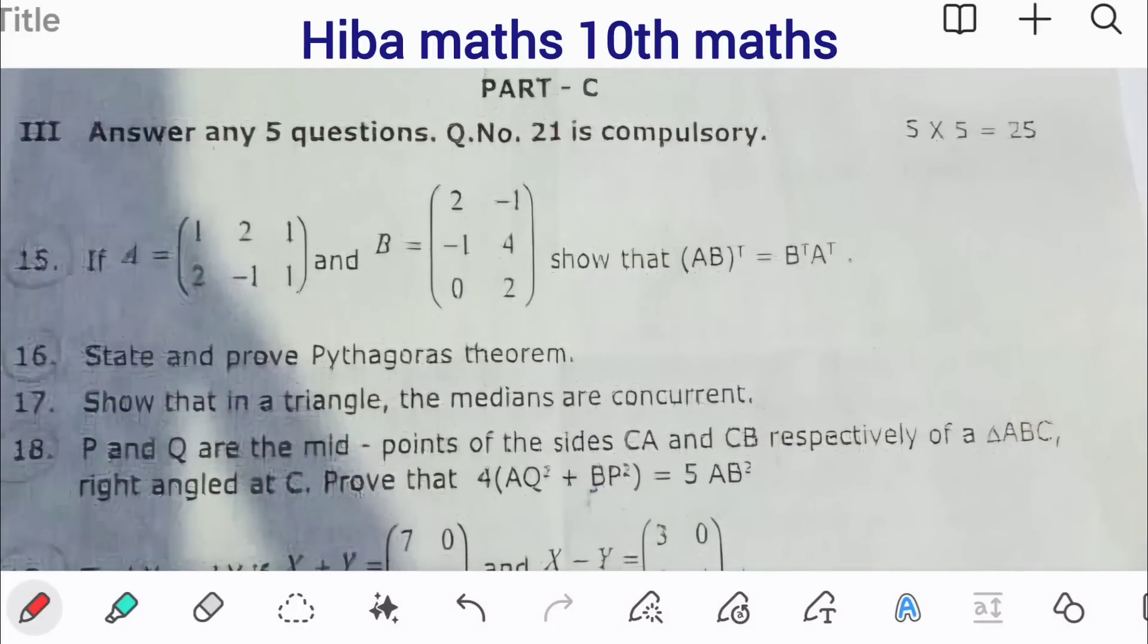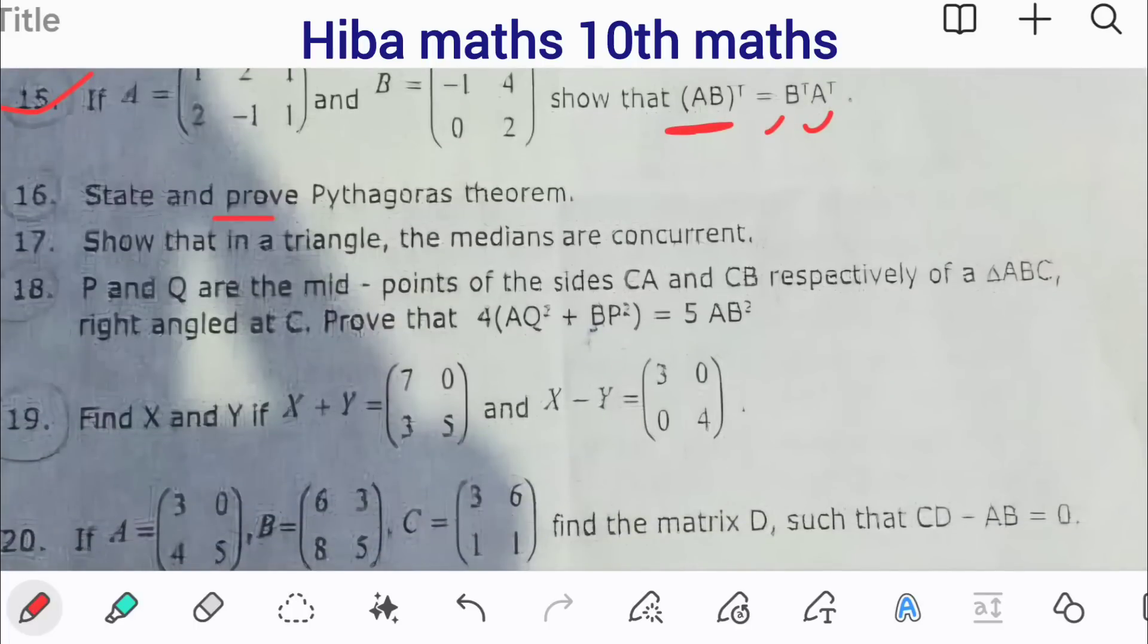Part C: 5 mark questions. Show that (AB) whole transpose equals B transpose into A transpose. First find AB, then transpose it. Or first find B transpose, then A transpose, then multiply. That's what we want to attend. State and prove Pythagoras theorem. Show that in a triangle, the medians are concurrent. Prove that 4(AQ² + BQ²) = 5AB. These are the important questions.